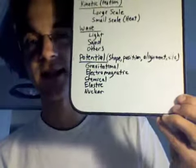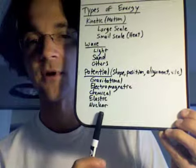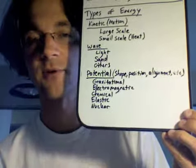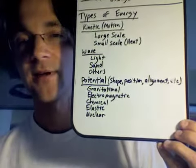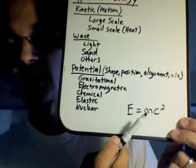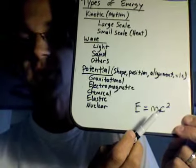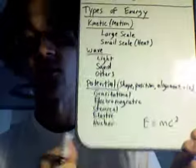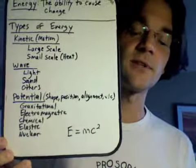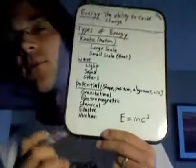Last but certainly not least is nuclear potential energy. It's nuclear — don't pronounce it wrong. Nuclear energy is energy stored in matter. Albert Einstein figured out, in one of his more famous equations, that energy and mass are related. Every kilogram of mass you have contains an enormous amount of energy. The number c squared — the speed of light squared — is huge. So each kilogram of matter in you, were it to convert into pure energy, would be enough to destroy all of Madagascar. Matter contains an extraordinary amount of pure energy stored in the form of nuclear potential energy.